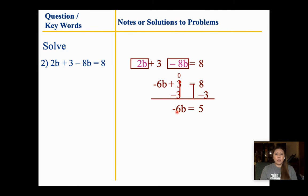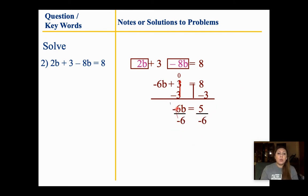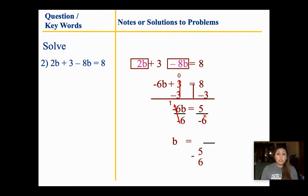I need to get rid of this negative 6. I'm going to divide both sides by negative 6 — please do not forget that negative. Negative 6 divided by negative 6 gives me 1, so my b stays by itself. Now 5 and negative 6: I can't evenly divide them. Please do not put it as a decimal. We're going to leave it as negative 5 over 6. That negative sign can be on the top, bottom, or in between. So my answer is a fraction — it's okay to have fractions, no big deal.